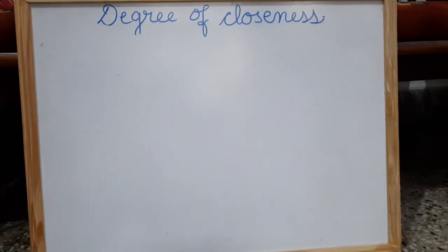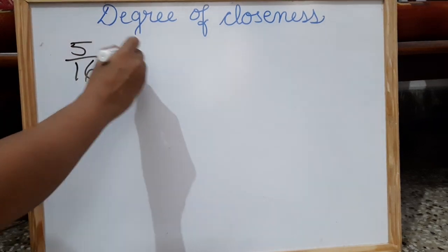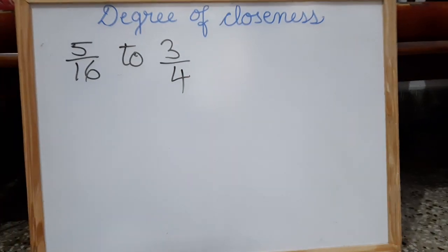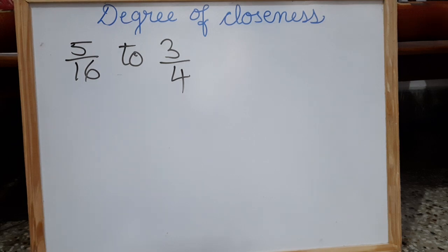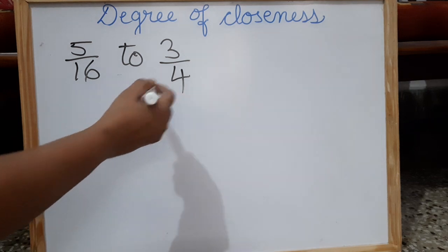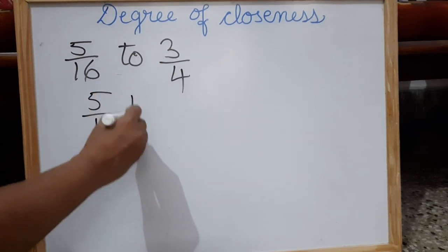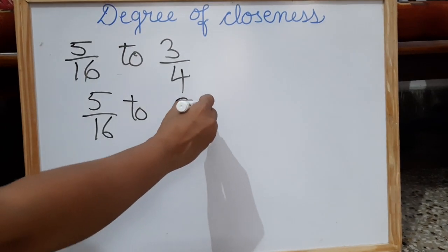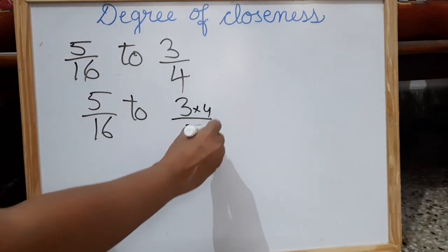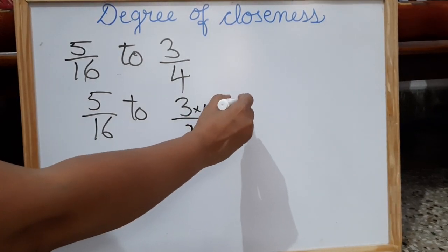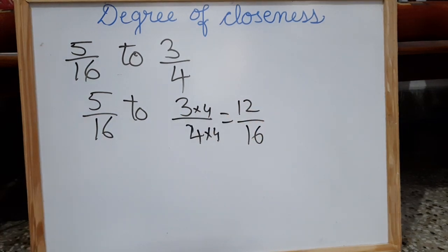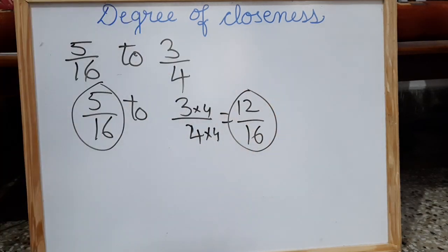Let us take one more example. This time I will take unlike fractions: 5 by 16 to 3 by 4. Now these are unlike fractions, so first make them like. To make them like, we have to find the LCM and make the denominators equal. So this will become 5 by 16 to 12 by 16.